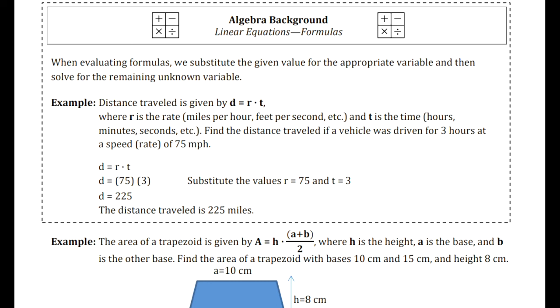For example, from physics a very important equation is distance equals rate times time, or d equals rt. So for this formula, if you have numbers for two of the variables, you can find the third variable.